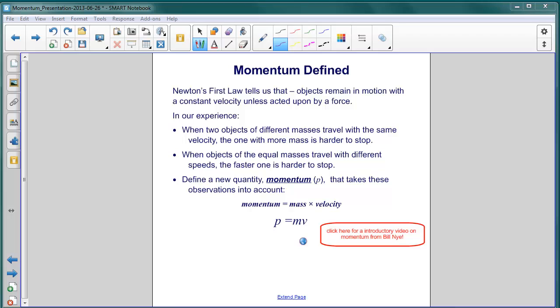Let's take a look first at Newton's first law. That law tells us that objects remain in motion with a constant velocity, that is, a constant speed and a fixed direction, unless acted upon by a non-zero external force.